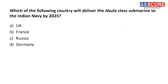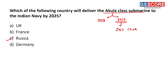Next question: which country will deliver the Akula class submarine to the Indian Navy by 2025? Akula class submarines will be delivered by Russia. India has already used two Akula class submarines: the first was delivered in 1998, and the second — INS Chakra — was leased from Russia in 2012 for 10 years (2012 to 2022). Now India will be getting an additional Akula class submarine from Russia by 2025. The answer is C.